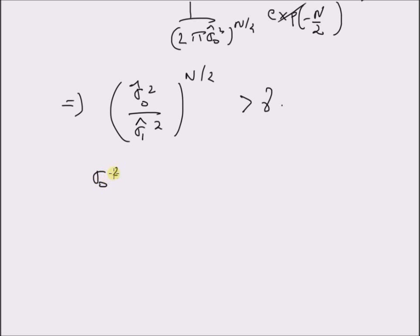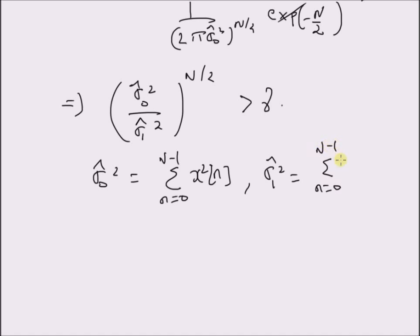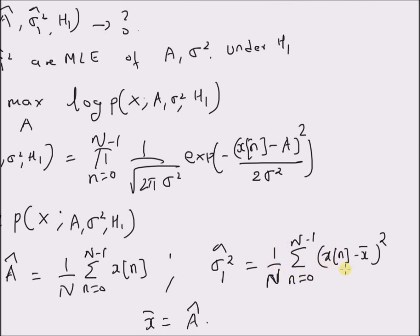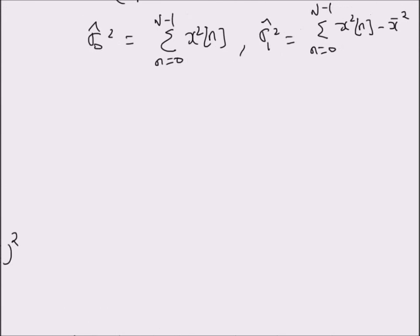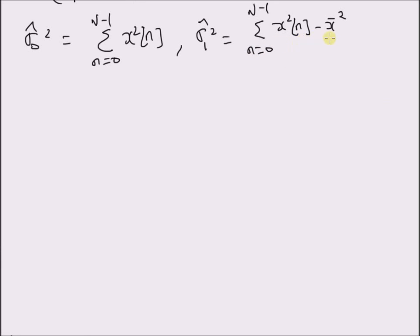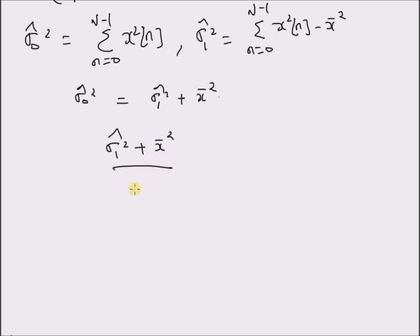Since sigma-zero-squared-hat = (1/N) Σ x²(n), and comparing with sigma-one-squared-hat = (1/N) Σ (x(n) − x̄)², we can clearly see that sigma-zero-squared-hat = sigma-one-squared-hat + x̄². Using this, the GLRT becomes (sigma-one-squared-hat + x̄²) / sigma-one-squared-hat, raised to the power N/2, greater than gamma.